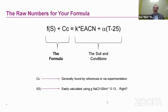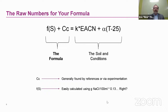Now let's look at the formula. The characteristic curvature is generally found via references or determined experimentally. The salinity function is calculated as grams sodium chloride divided by 100 milliliters times 0.13 — but the problem is we don't really think about builders in terms of salinity. Builders may be sodium carbonate, sodium hydroxide, sodium citrate, etc., and these don't translate well to sodium chloride. So what do we use to fill in that salinity term?